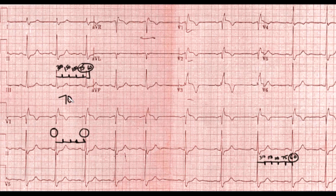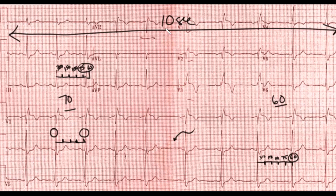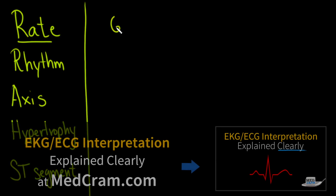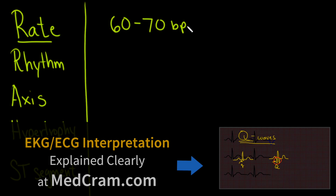Whereas over on one side it's probably around 70, over here it's probably more around 60. It looks as though something happened right about here where there was a change. Remember that the entire strip is about 10 seconds. If we count up the number of QRS complexes and multiply by six, we get the rate per minute. Counting about 10 complexes times six gives a little bit more than 60 — somewhere between 60 and 70, which is exactly what we come up with. So the rate is somewhere between 60 and 70 beats per minute.